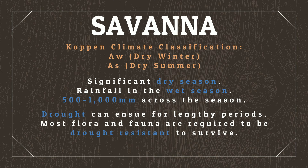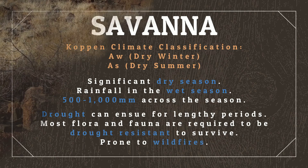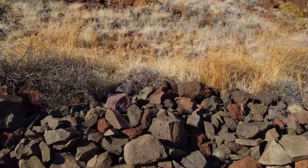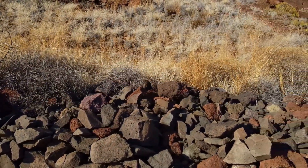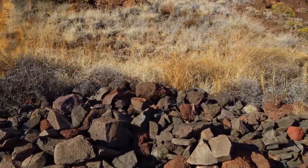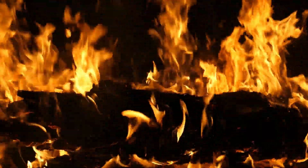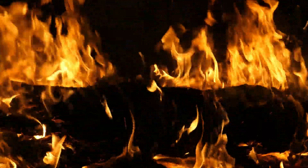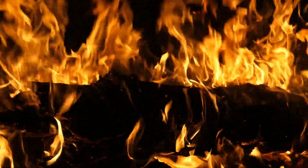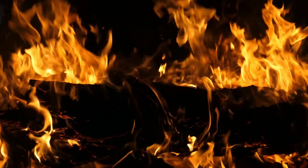Outside of wet seasons, drought can ensue for lengthy periods, and most flora and fauna are required to be drought-resistant to survive. These droughts make conditions exceptionally dry, which makes savannas prone to wildfires. And in periods where there's been less rain across the wet season, these wildfires can be truly devastating to the wildlife of the savannah.